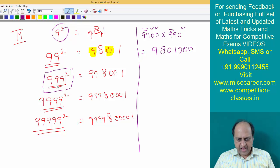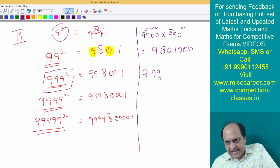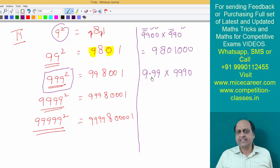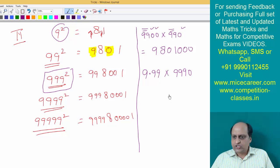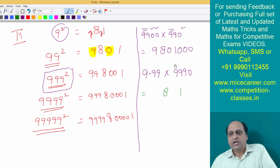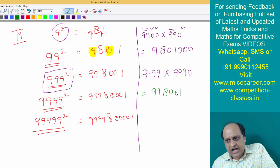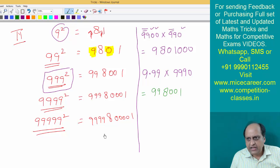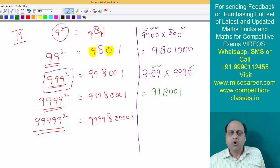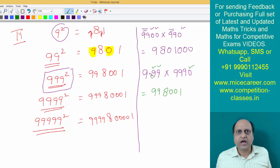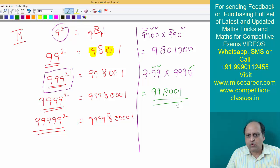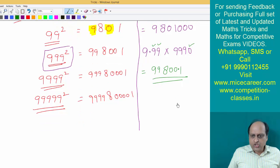Now suppose the problem is 9.99 × 990. Forget about decimals and zeros — it is nothing but the square of triple nine. Nine squared is 81; write it in green. Since there are three nines, insert two nines and two zeros, giving 998001. Now calculate: you have one zero and two decimal places — the zero cancels one decimal — so you are left with one decimal place. The answer is 99800.1.